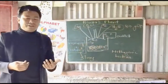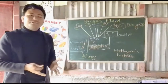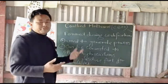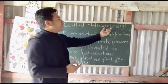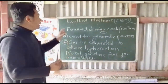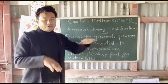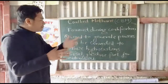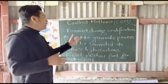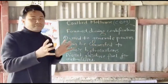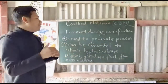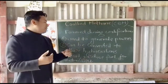This energy is very, very useful. Now we are going to discuss the last alternative source of energy: coal bed methane, abbreviated as CBM. It is formed during the coalification process, when plant matter is converted into coal in coal mines and coal beds.